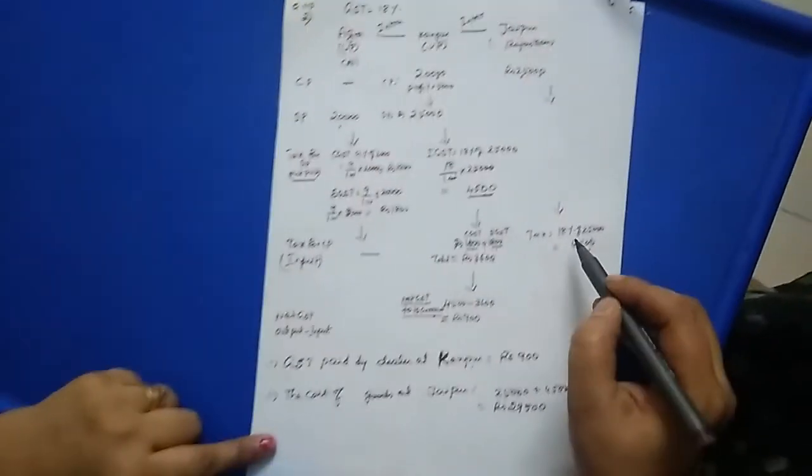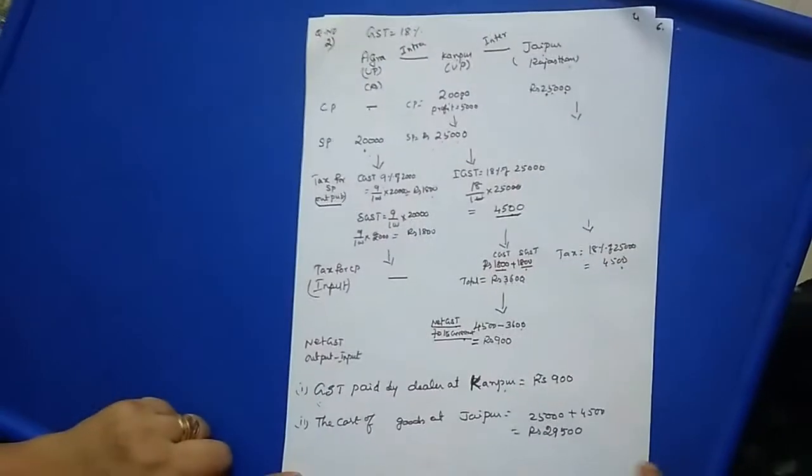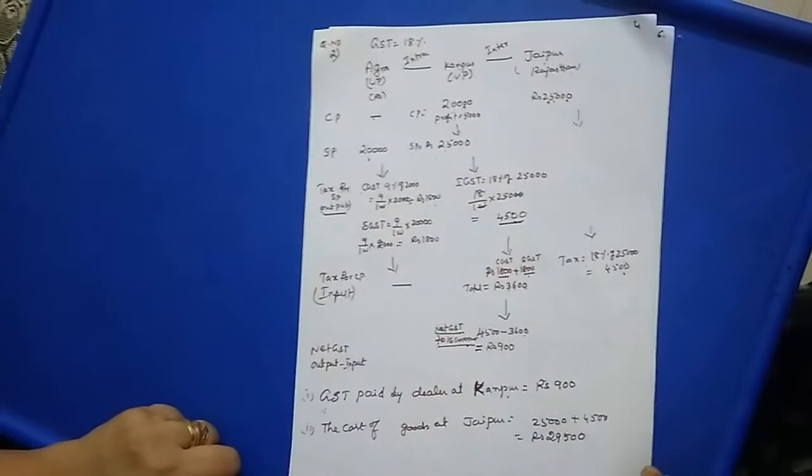For Jaipur: CP = 25,000. GST = 18% of 25,000 = 4,500. GST paid by Kanpur is 900. Total cost of goods at Jaipur = 25,000 + 4,500 = 29,500 rupees.